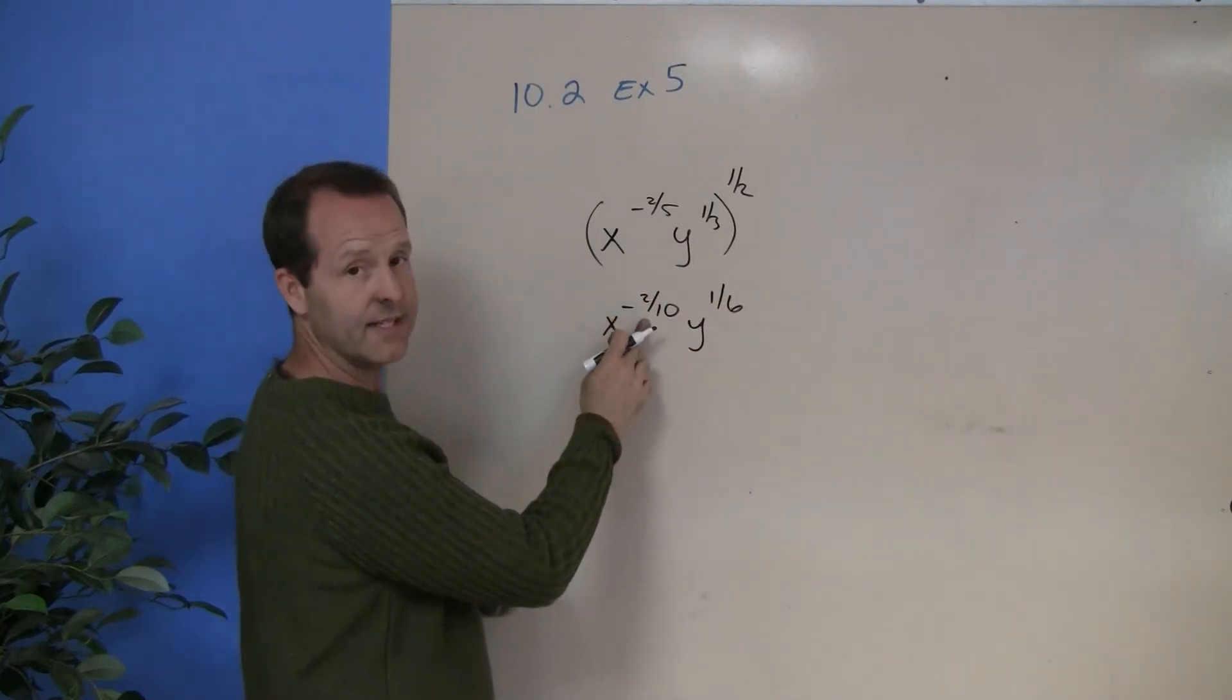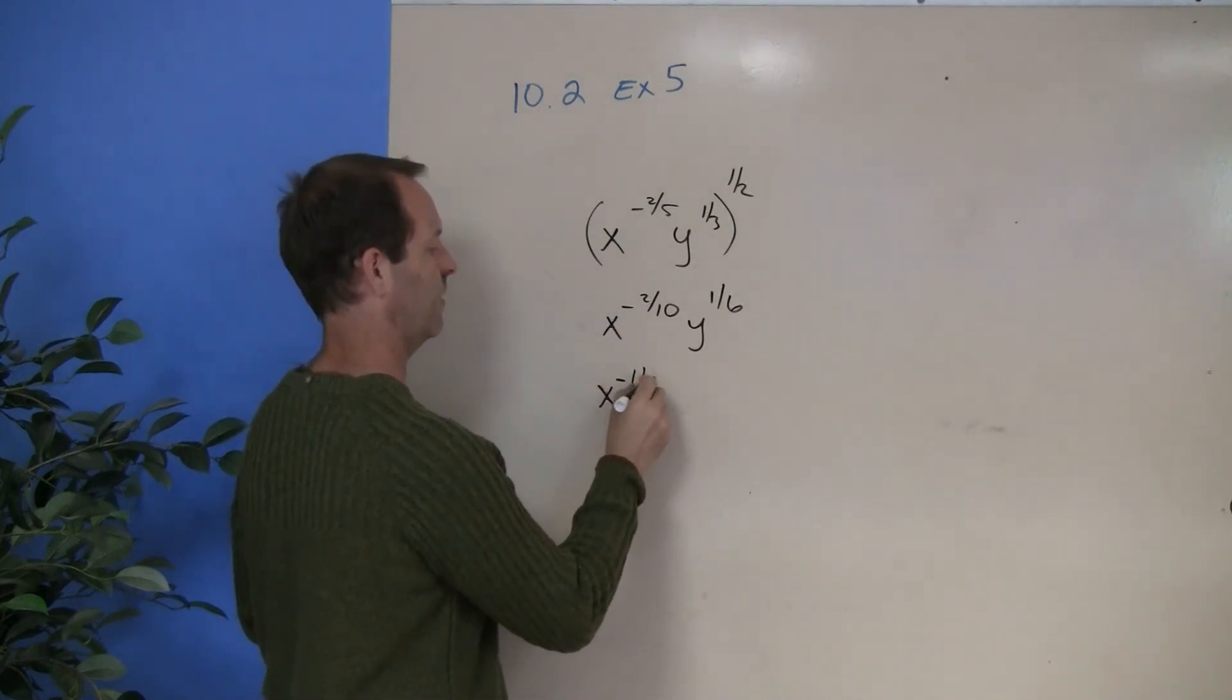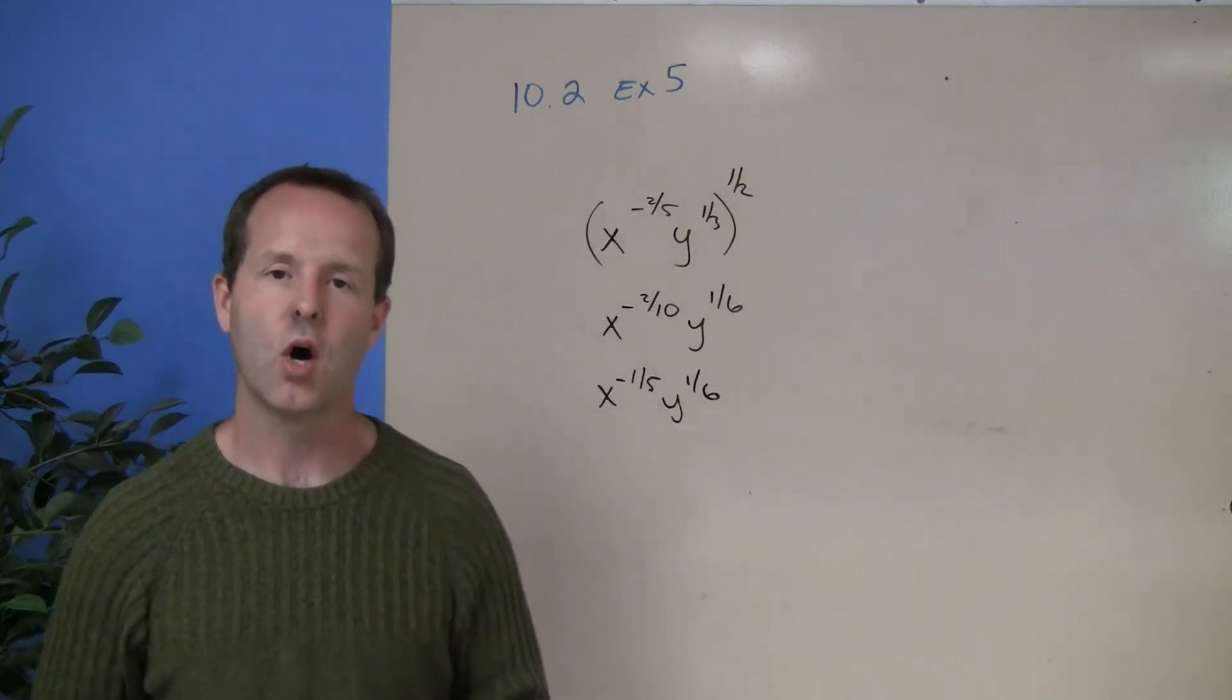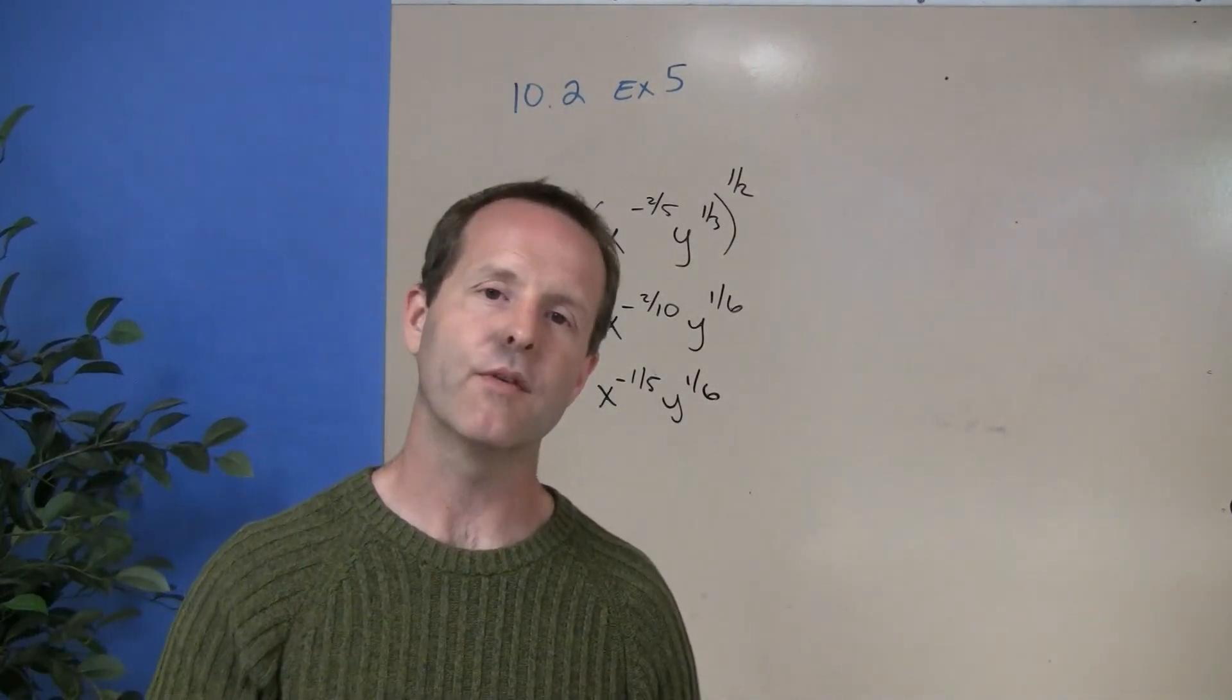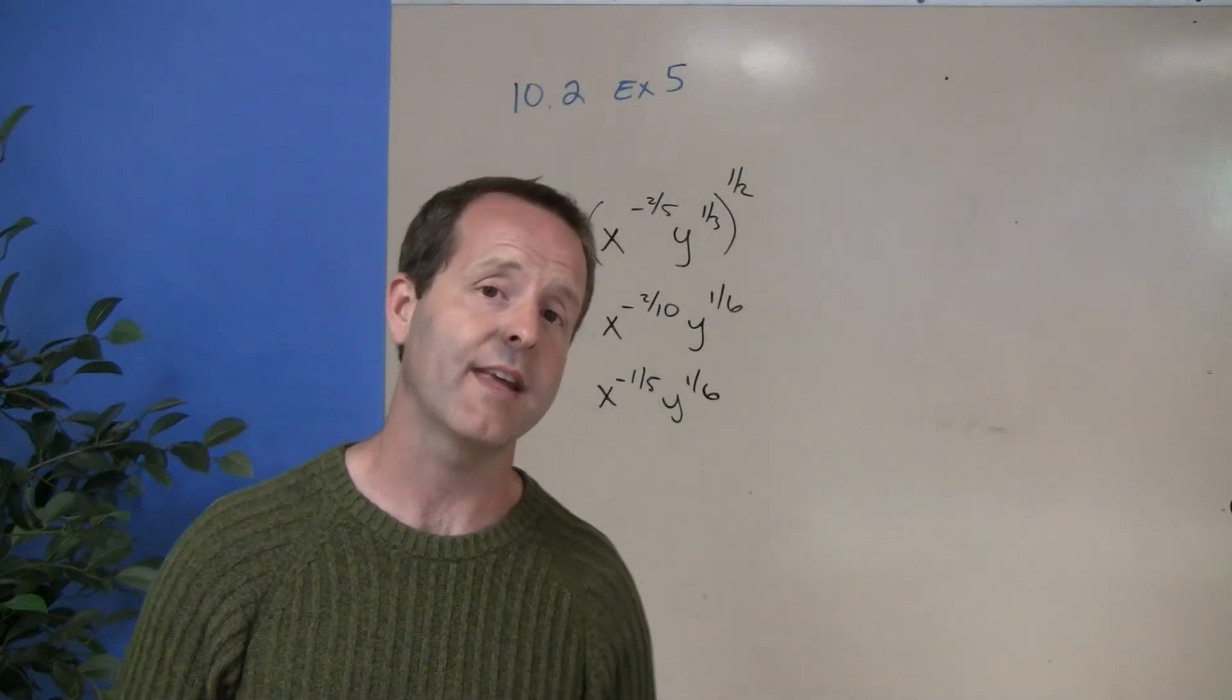I'm going to clean this 2/10ths up to a 1/5th. So I have x to the negative 1/5th, y to the 1/6th. And I'm almost home, except I have a negative in one of the exponents. So I want to change that, so I don't have any negatives in any of the exponents.